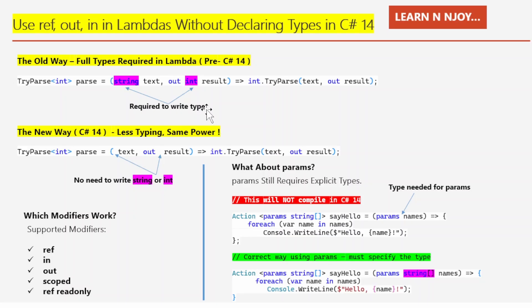If you've thought about it — when the types are already known from a delegate, why repeat yourself? That's the idea the C# 14 creators thought about, and they came up with this new feature where we do not need to write the type in lambdas. In the new way: less typing, same power. The compiler is now responsible to figure out what the type would be, making the code cleaner and faster to write.